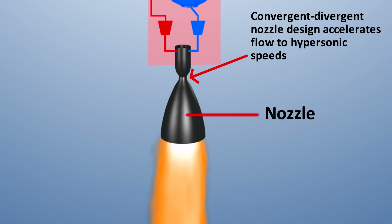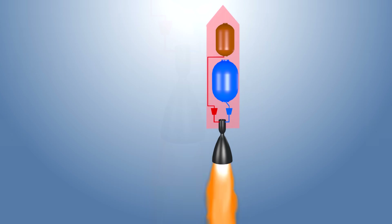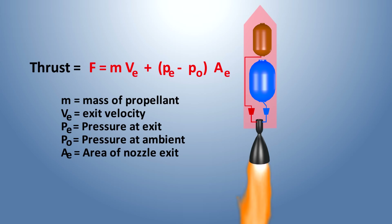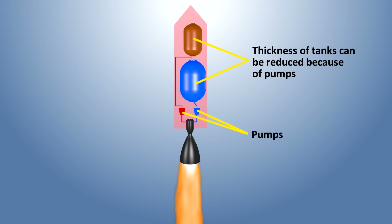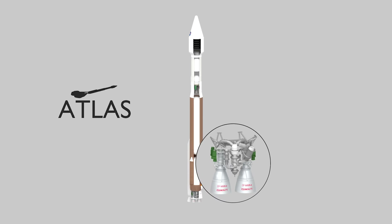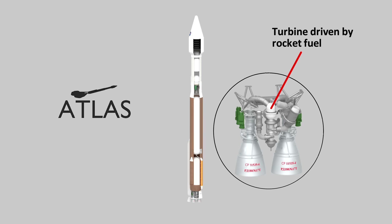Highest thrust is achieved when the mass flow rate of the fuel and exit velocity of the propellant are both high. The fuel has to be delivered at high volume and pressure to get the thrust required for lift. This pressure is powered by fuel pumps that boost the pressure of the gases before entering the combustion chamber. Because these pumps can boost the pressure, the fuel storage tanks don't need to be as thick, resulting in weight savings and increased payload capacity. These pumps are typically driven by using a small amount of fuel to drive a turbine which drives the pump.